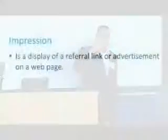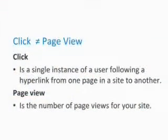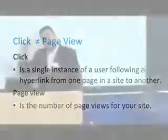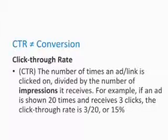There is some terminology commonly used in Google Analytics. An impression is when you go to a web page and see an ad or a referring link to a certain website. A click is when you click on that ad or link. Once you reach the web page and view it, that is a page view. So we have impressions, clicks, and page views. Then there is CTR, or click-through rate, which is the number of times an ad or link is clicked divided by the number of impressions. For example, if an ad is shown 20 times and receives 3 clicks, the click-through rate is 15% — 3 divided by 20.